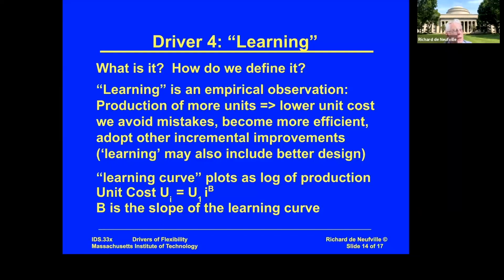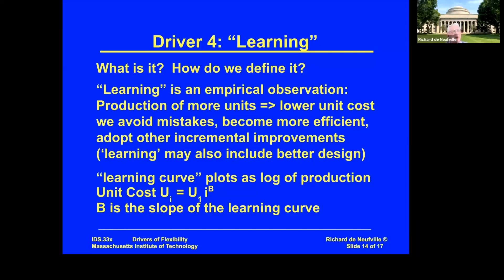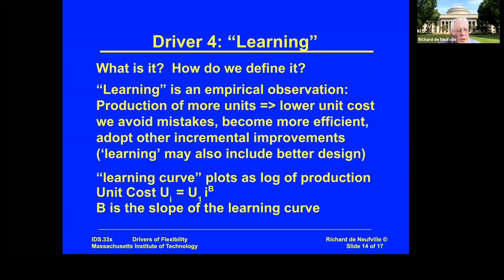It's a common kind of industrial analysis to compare the cost of producing a unit — whether it's a ship, a car, or an oil platform — by looking at what was the cost of the first design, the second, the third, and so forth. It's called learning on the basis that you've learned how to do it better. It may also reflect not just learning, but that you've changed the design somewhat — tweaked it so it's now more efficient — but collectively it's known as a learning phenomenon.